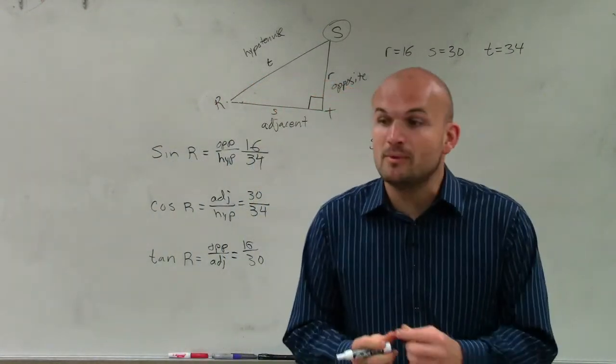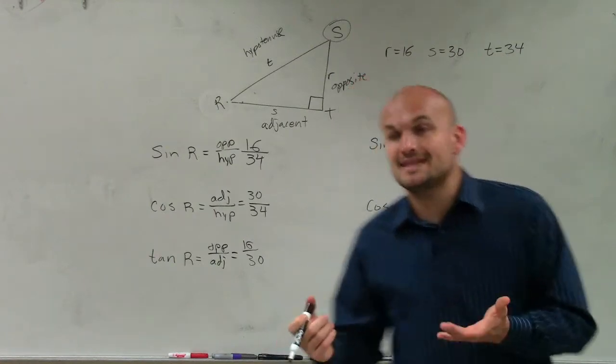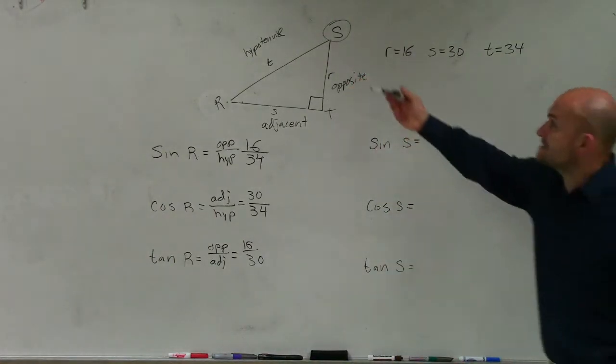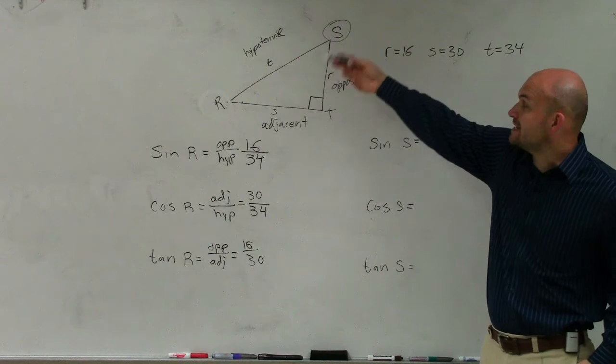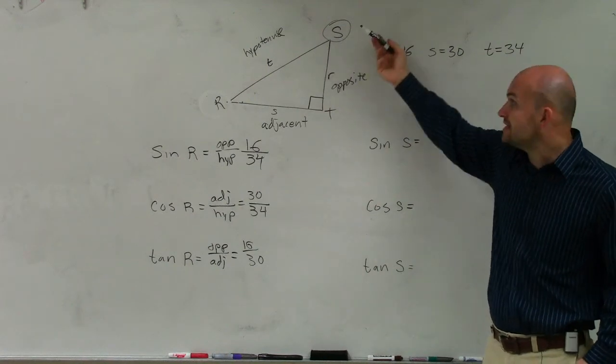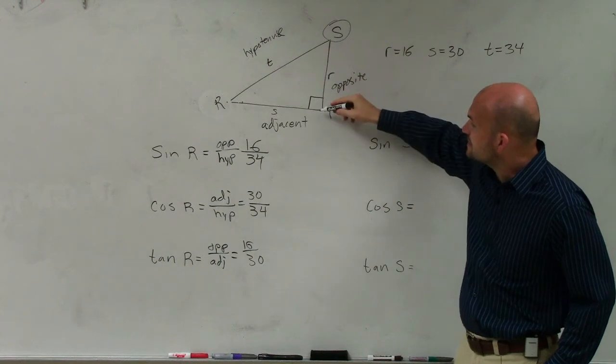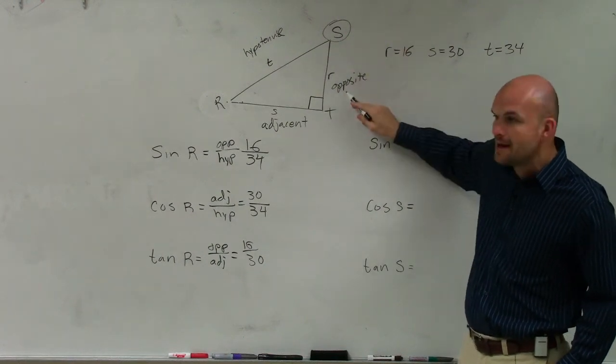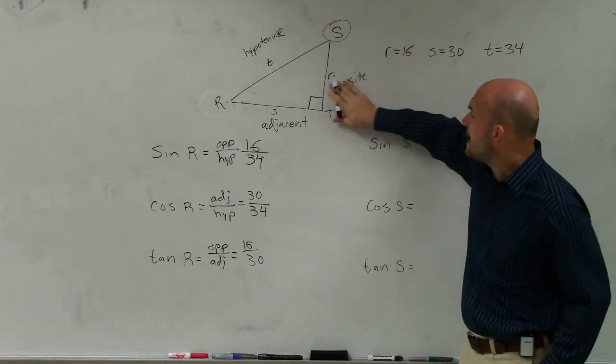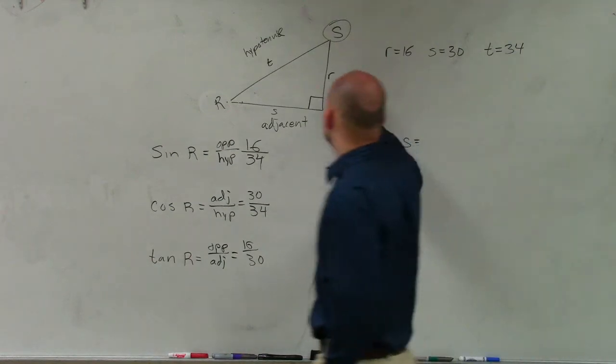So now, the next thing though, but we have an issue. Because we can't label them the same way now that we're asking for the sine, cosine, tangent of s. The reason being is because you look at this, now my angle s connected to my 90-degree angle, we are calling the opposite side, which is not correct. That is now the adjacent.